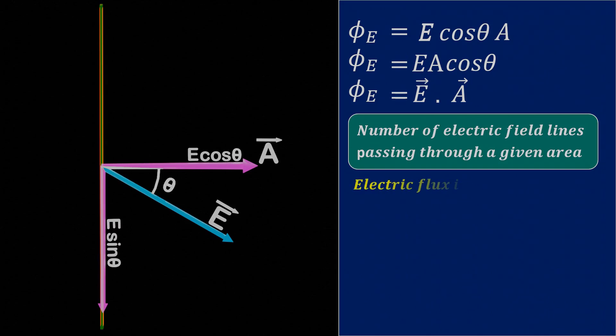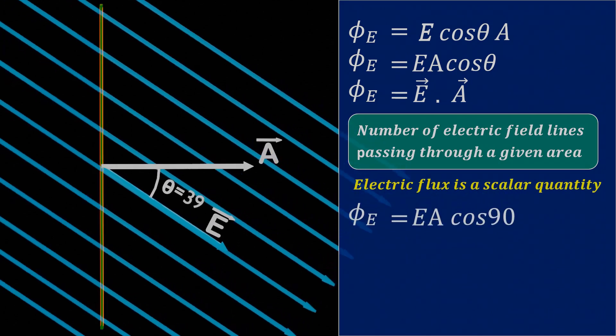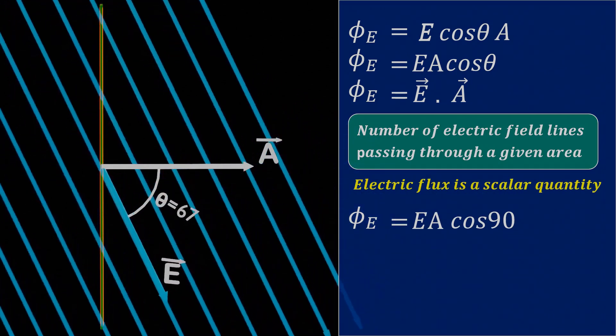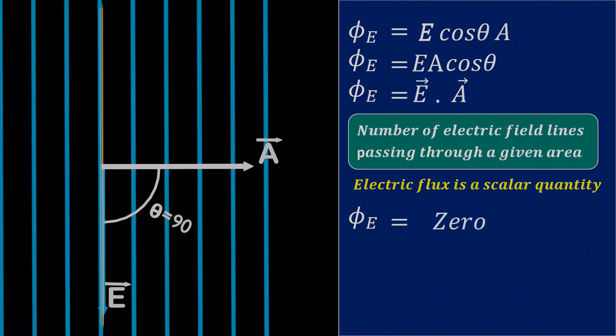At theta equals 90 degrees, electric flux linking to a surface will become zero, as cos 90 equals zero. Which we can see in the animation, that at theta equals 90 degrees, electric field is parallel to the surface, and not passing through the surface.